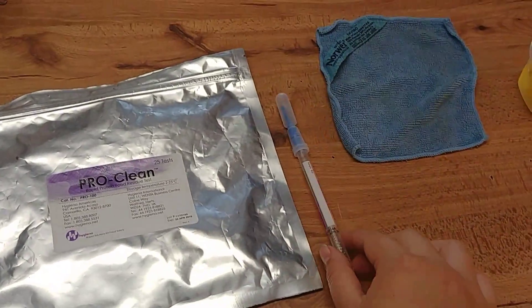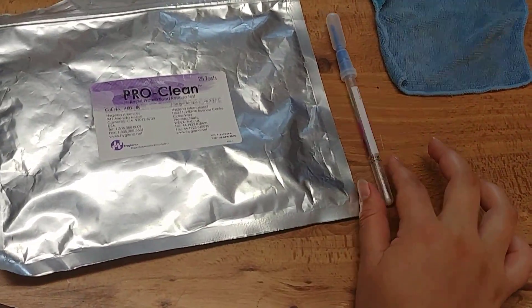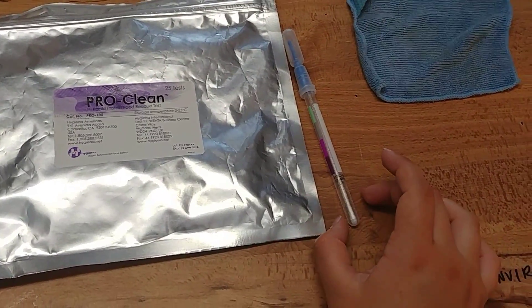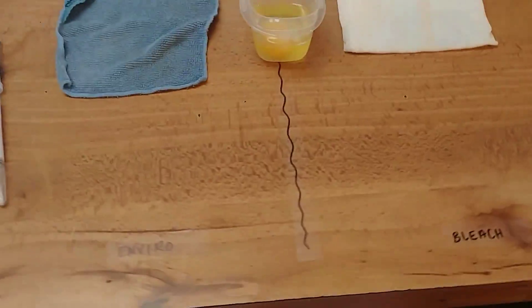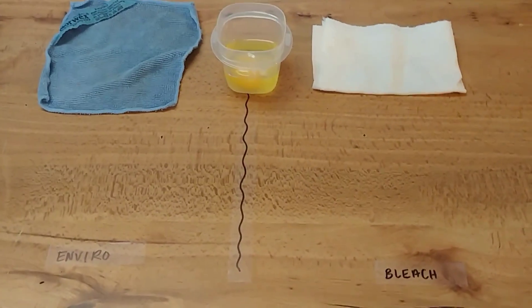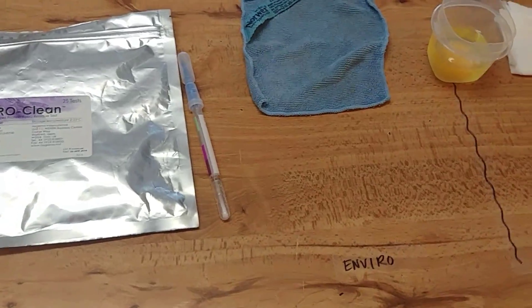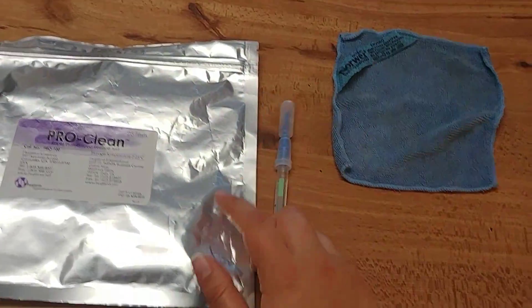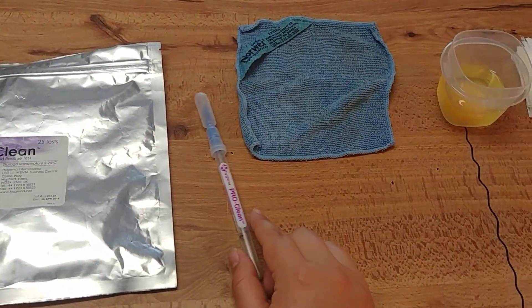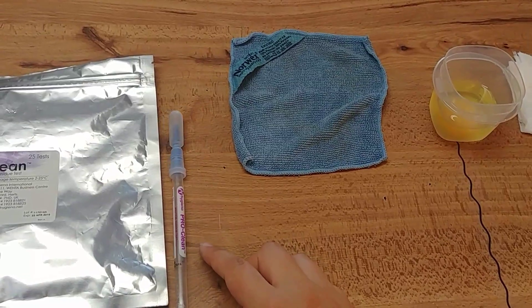These are used in restaurants and things like that to test the cleanliness of the restaurant. Protein particles are smaller than almost any bacteria or germs, so we use the protein to demonstrate what exactly the Norwex cloths can pick up.